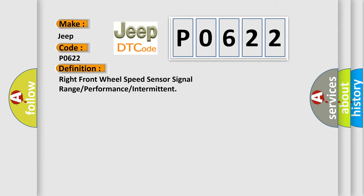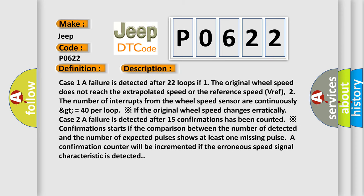And now this is a short description of this DTC code. Case 1: A failure is detected after 22 loops if the original wheel speed does not reach the extrapolated speed or the reference speed. The number of interrupts from the wheel speed sensor are continuously greater than or equal to 40 per loop if the original wheel speed changes erratically.